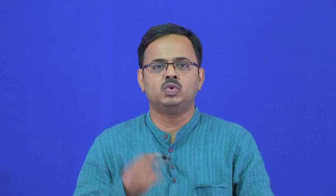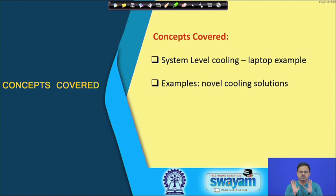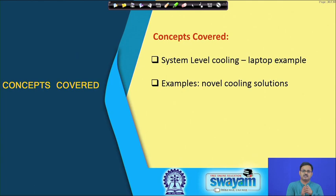Today we will do two things. One is we will look at what is called system-level cooling. So far we were only talking about cooling a CPU or a graphics chip — these were component-level cooling solutions. Today we will see what about system level, because there are multiple components to be cooled. We will take the example of a laptop computer as a generic case, and we are also going to talk about a few examples of novel thermal technologies.